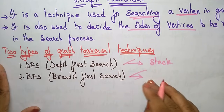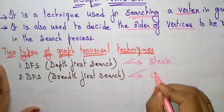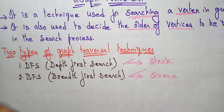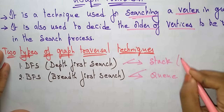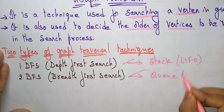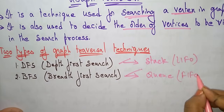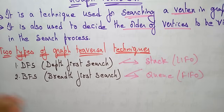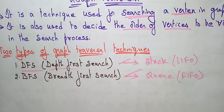BFS uses the queue data structure. The only difference is the way you are visiting and deleting nodes from memory — stack is last in first out, whereas queue is first in first out. Using these techniques we will implement DFS and BFS.